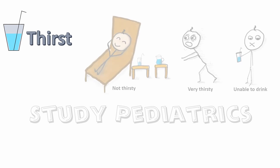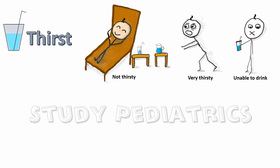The fifth parameter is thirst: normal for a no-dehydration child; increased — the child literally goes crazy for water — in some dehydration. But in severe dehydration, since the child is lethargic, he or she may feel thirsty but is unable to drink.